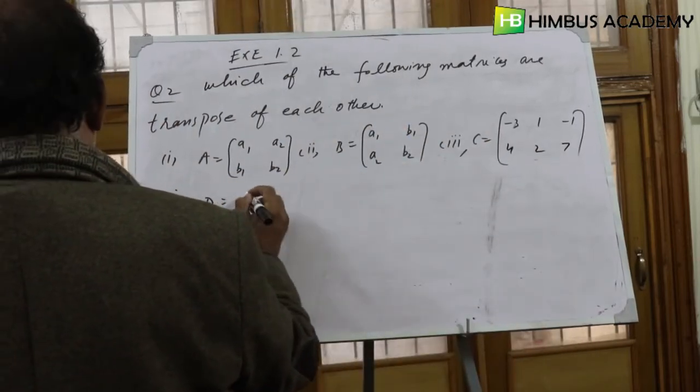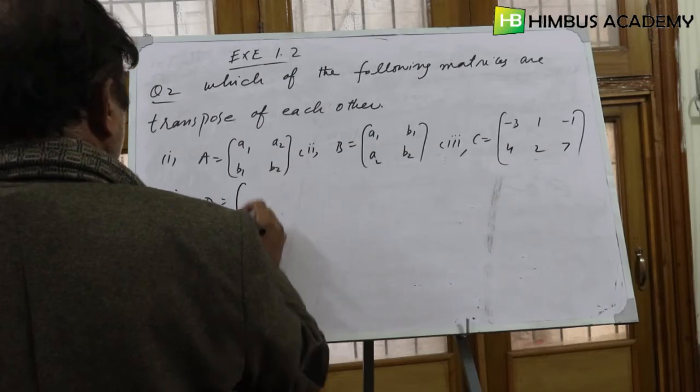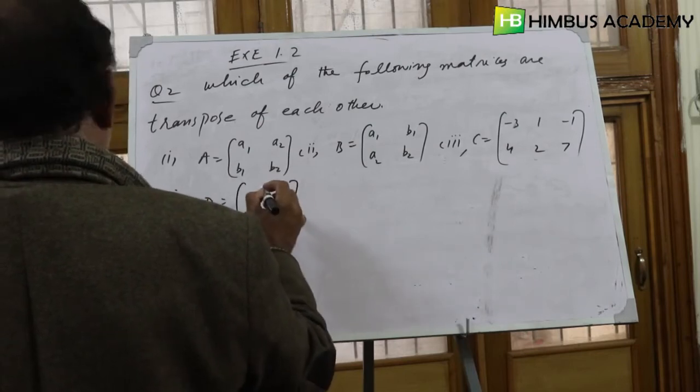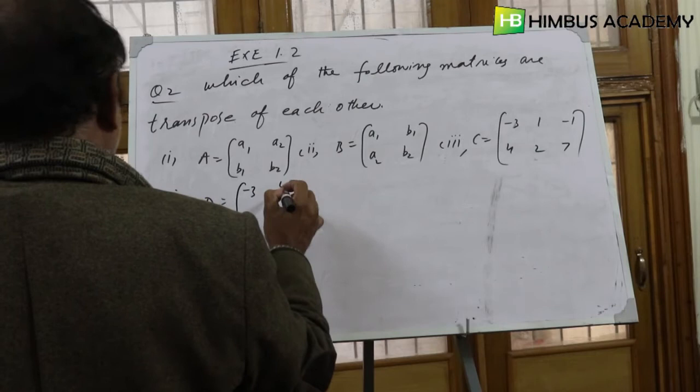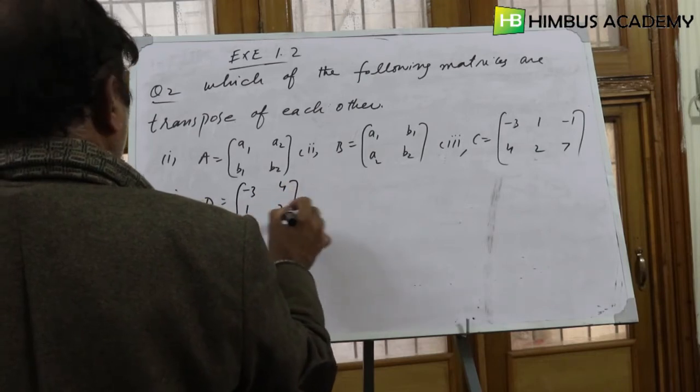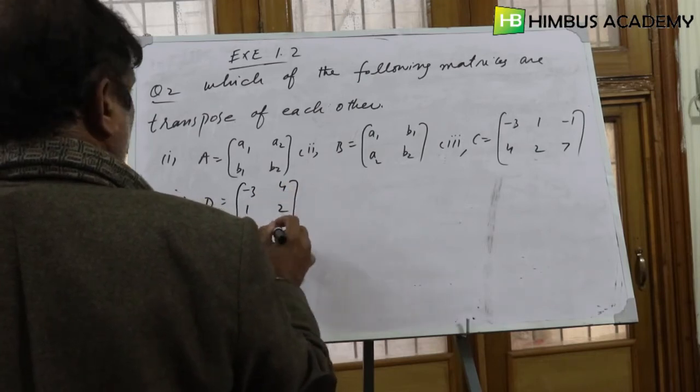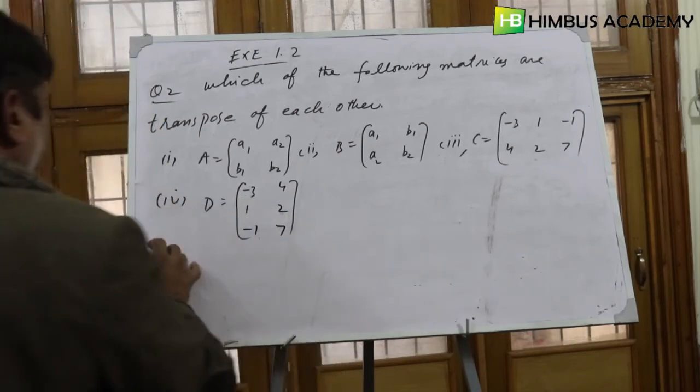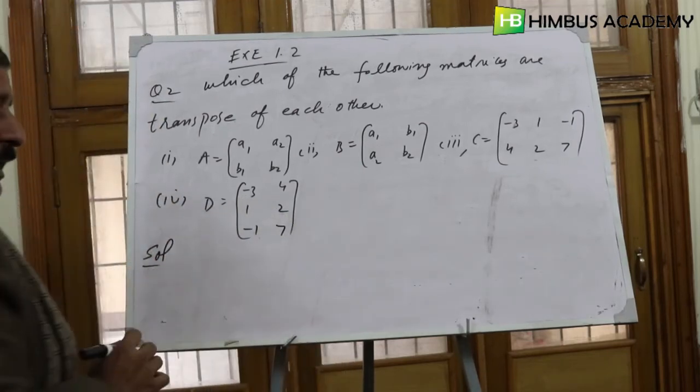Number four: D is equal to [-3, 4; 1, 2; -1, 7]. So we are asked about these four matrices - matrix A in number one, matrix B in number two, matrix C in number three, and matrix D in number four.